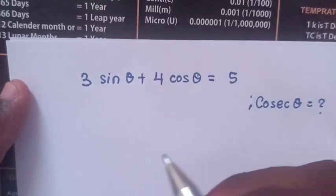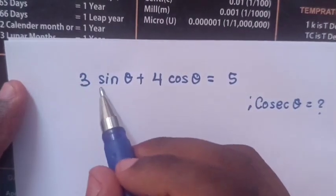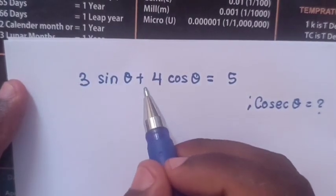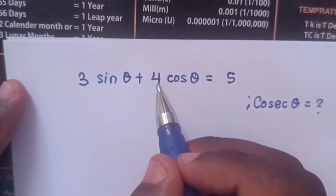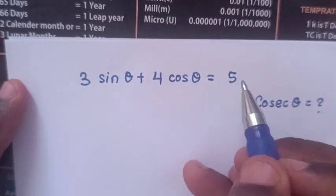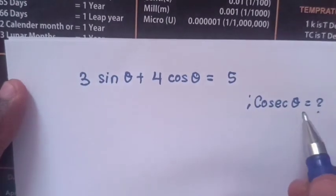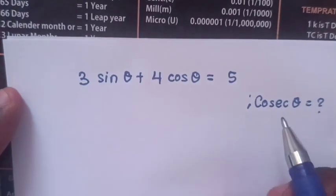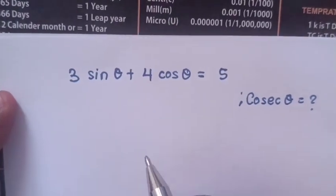Hello. To solve 3 sin θ + 4 cos θ = 5, find the value of cosec θ.